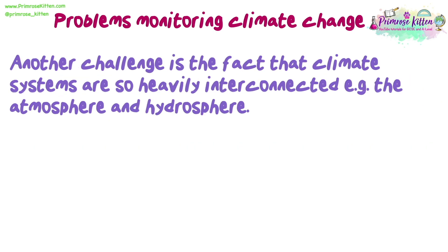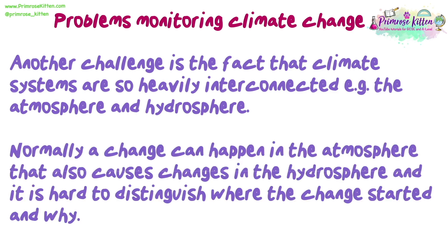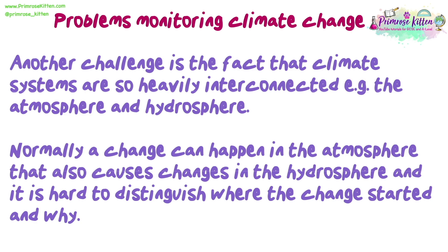Another challenge is the fact that climate systems are so heavily interconnected — for example, the atmosphere and the hydrosphere. A change can happen in the atmosphere that also causes changes in the hydrosphere, and it's hard to distinguish where the change started and why. For example, changing ocean currents could be a result of temperature changes, wind patterns, or the density of sea water, and it would be difficult to definitively prove which specific one it was.